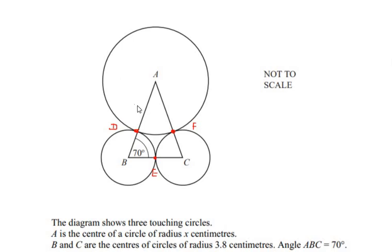B and C are the centers of the circles of radius 3.8 centimeters. So here BD is 3.8 centimeters, BE is 3.8, and the same thing repeats for the circle C.